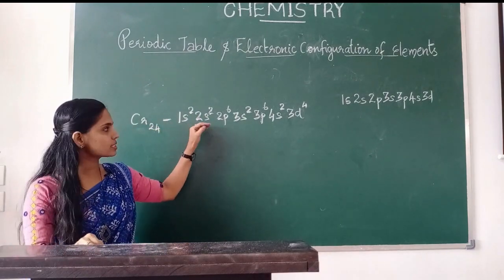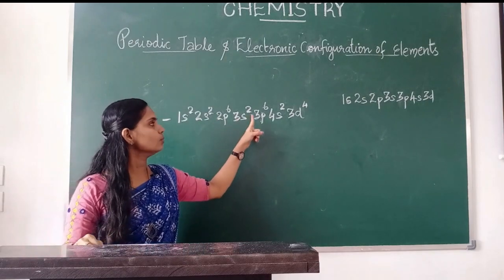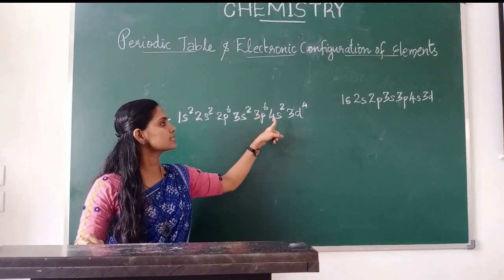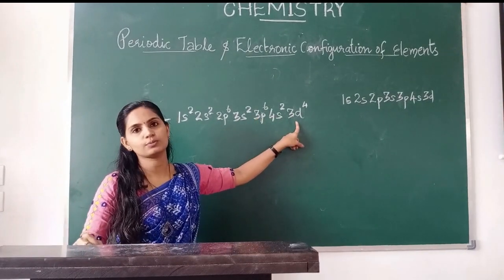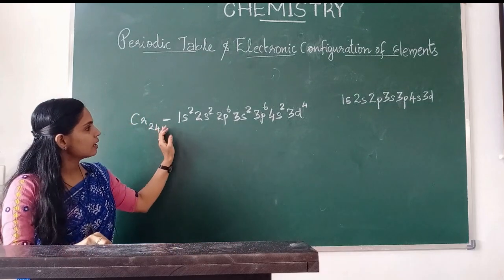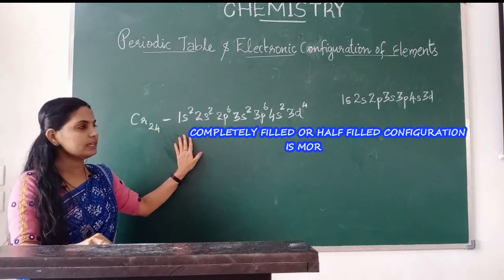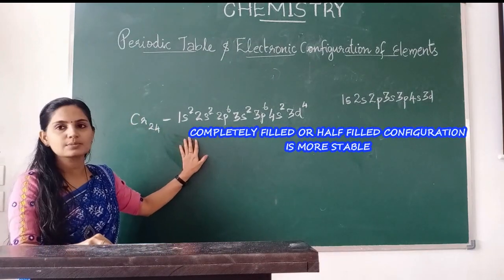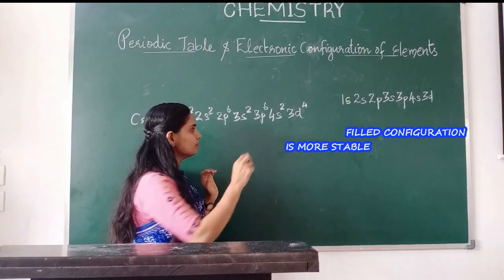Written out: 1s2, 2s2, 2p6, 3s2, 3p6, 4s2, 3d4. But completely filled or half-filled configuration is more stable than others.